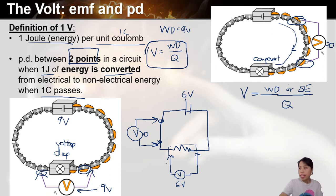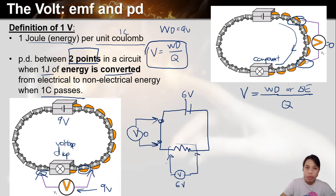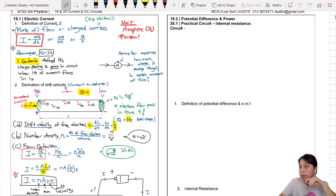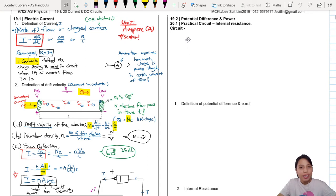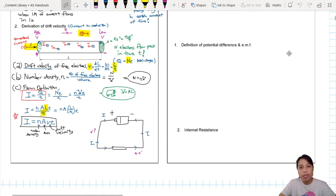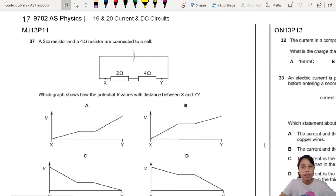That's the end of the theory section. Now let's look through some past year examples to help us practice this idea of voltage, PD, and EMF. The first question is on page 17 of the handout, and there's no calculation involved yet.